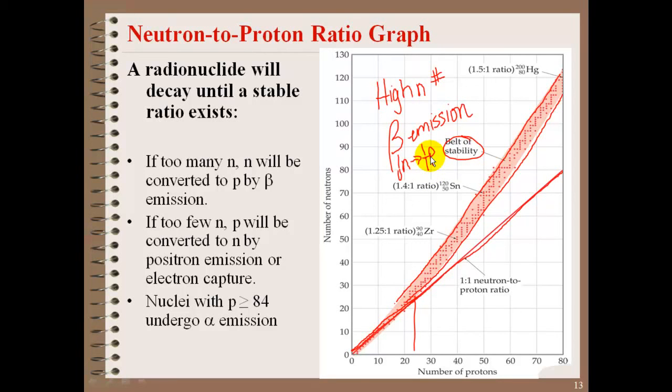Below the belt, you're going to see a high number of protons. Here you're going to increase your neutron ratio by positron, our positive electron, or electron capture. This here will increase our number of neutrons.